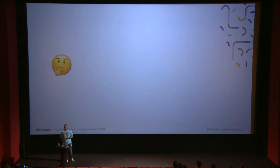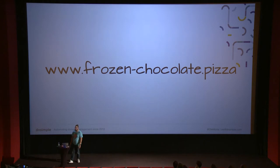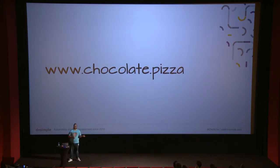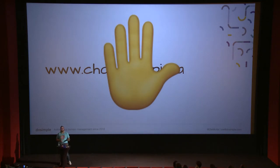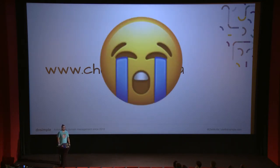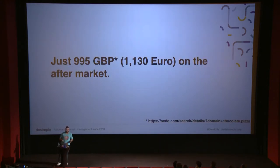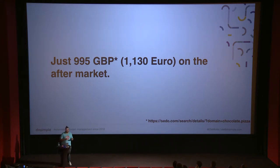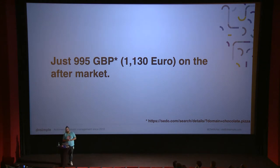Wait — frozenchocolate.pizza is really hard to pronounce, and for my new startup I don't want the focus on 'frozen.' I like chocolate.pizza — that'd be really neat. But obviously, chocolate.pizza is already taken. Fortunately, you can buy it for 1,130 euros — that's 995 Great British pounds — on the aftermarket. This was an actual search I did on Sedo, their domain aftermarket place where you can buy registered domains and make offers. I will not spend the money, so if you want to, please do.